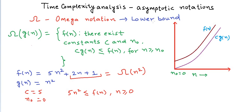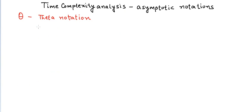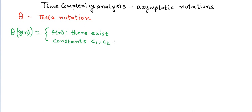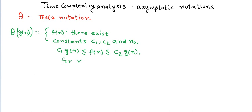Let us now see the third asymptotic notation, called Theta notation. If we have a positive function g(n) that takes positive argument n, then Θ(g(n)) is defined as the set of all functions f(n) such that there exist constants c1, c2, and n₀ for which c1·g(n) ≤ f(n) ≤ c2·g(n) for all n ≥ n₀.